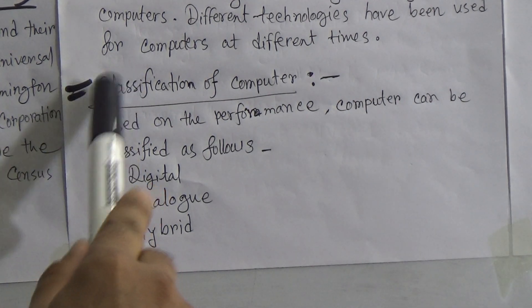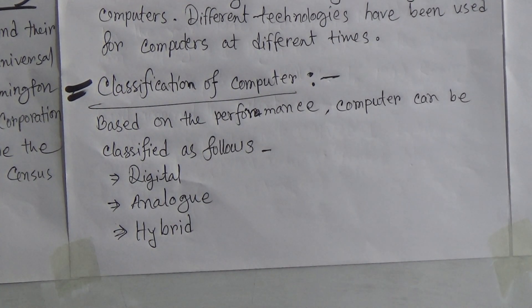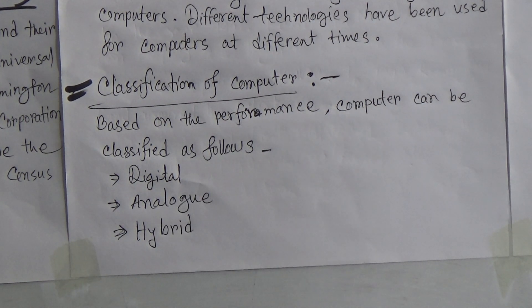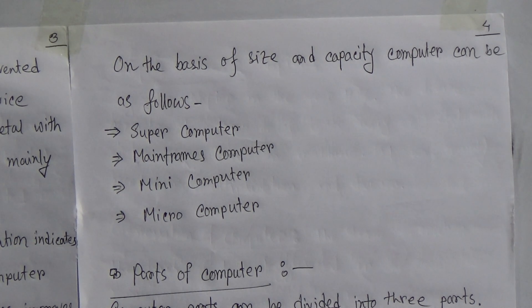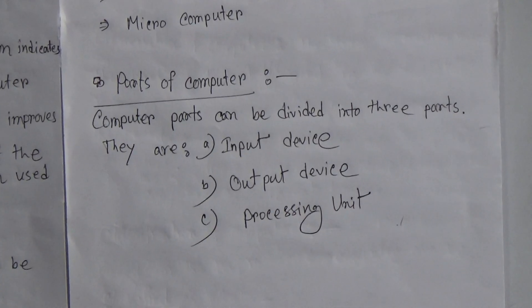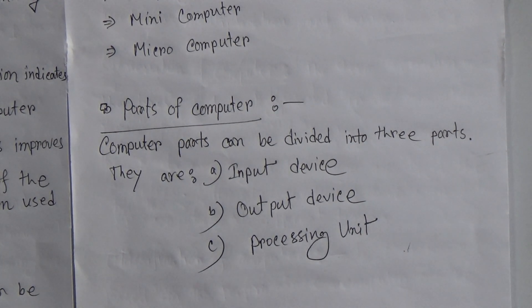Now we will talk about the classification of computer. Based on performance, computers can be classified into three types: digital, analog, and hybrid. On the basis of size and capacity, computers can be divided into four types: supercomputer, mainframe computer, mini computer, and micro computer. Parts of computer — this is very important. Computer parts can be divided into three parts: input devices, output devices, and processing unit.